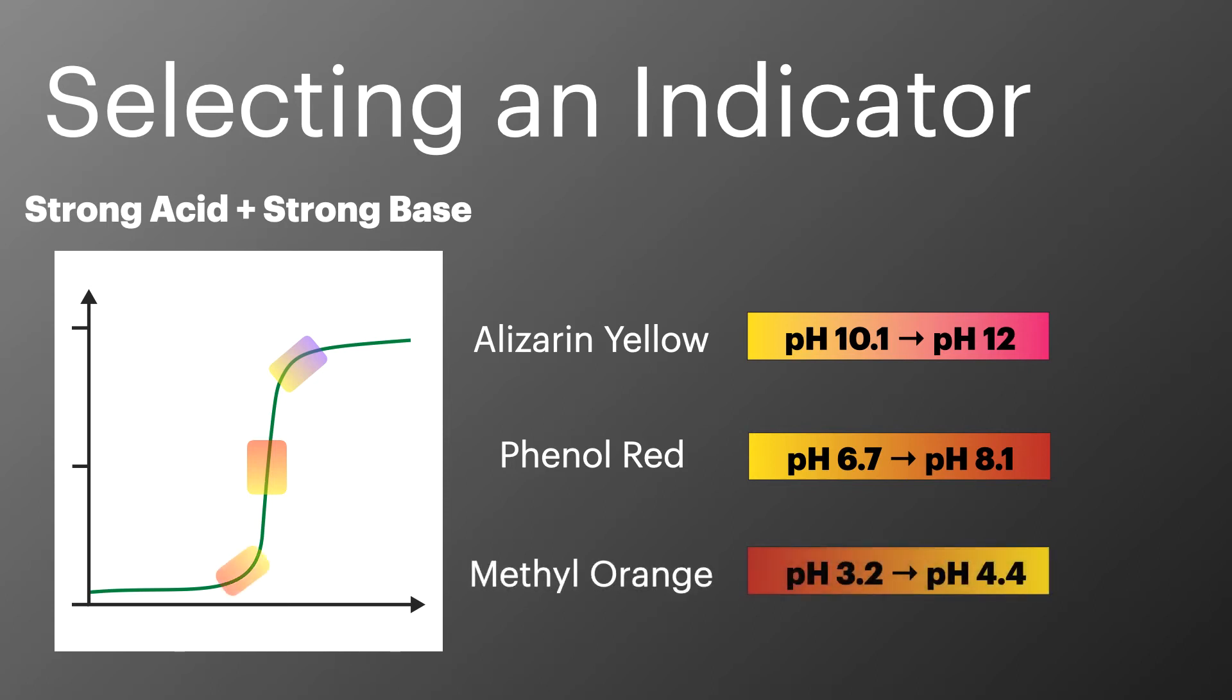Methyl orange has a pH range of 3.2 to 4.4 and this would be too low as it also misses the equivalence point. So in this situation phenol red is the most suitable indicator.